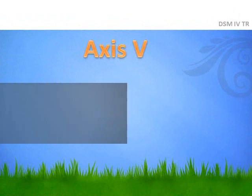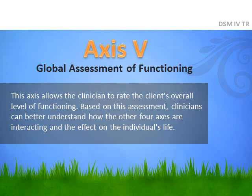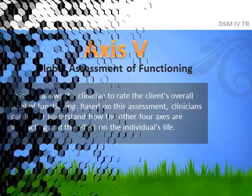Axis 5 is the Global Assessment of Functioning, or the GAF scale. This axis allows clinicians to rate the client's overall level of functioning, and based on this assessment clinicians can better understand how the other four axes are being affected by the patient's lifestyle.